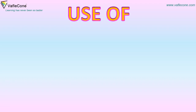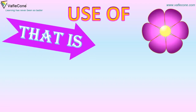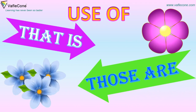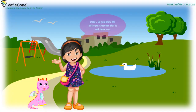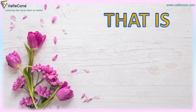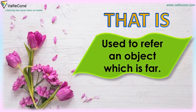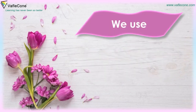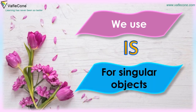Use of 'that is' and 'those are'. Doodoo, do you know the difference between 'that is' and 'those are'? No, Jiya. Let's see the difference. 'That is' is used to refer to an object which is far. Use 'is' for singular subjects. Let's look at the examples.